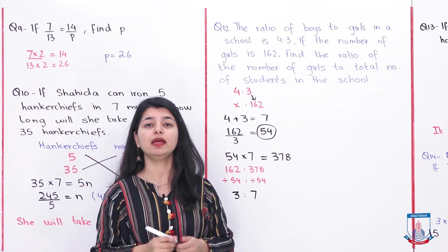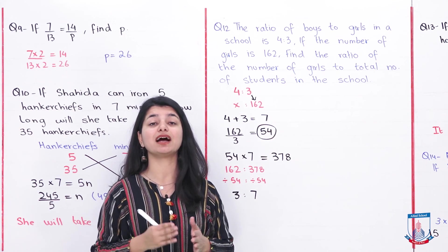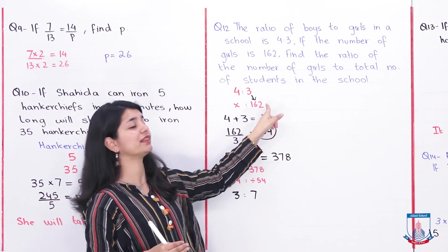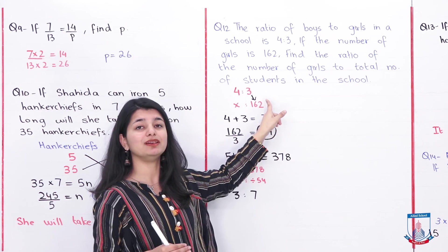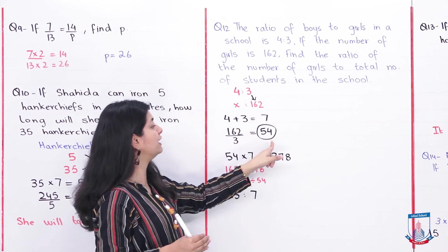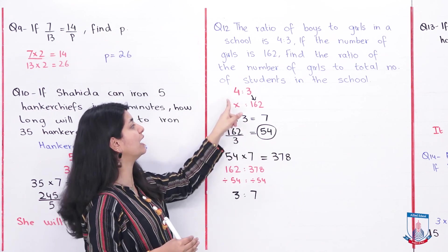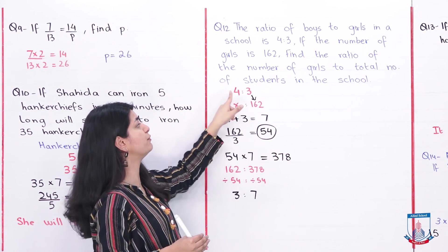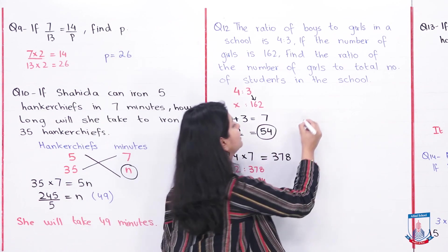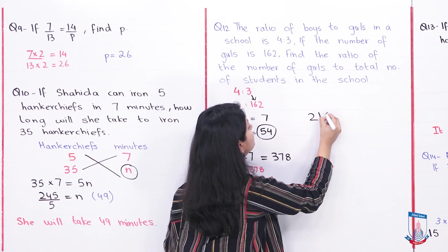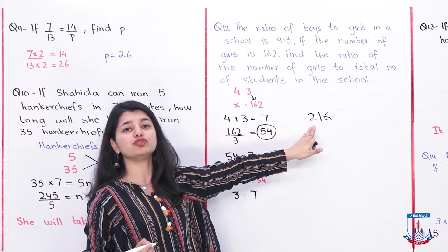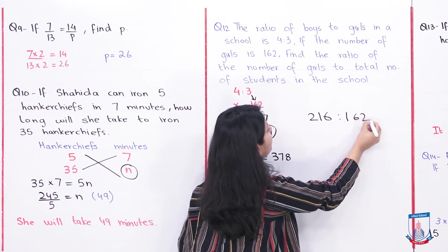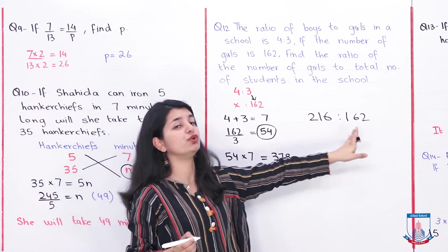Now we calculate: girls are 54 multiplied by 3 equals 162. Boys are 54 multiplied by 4 equals 216. So boys are 216 and girls are 162, which confirms the ratio of 4:3. This is the boys-to-girls ratio as originally given.